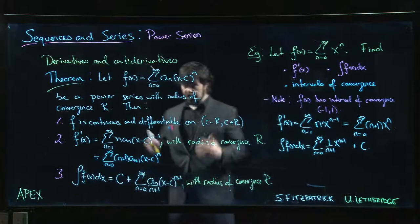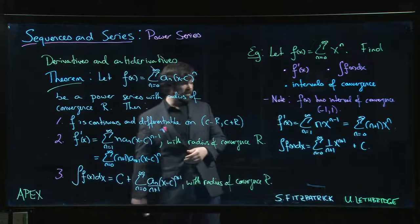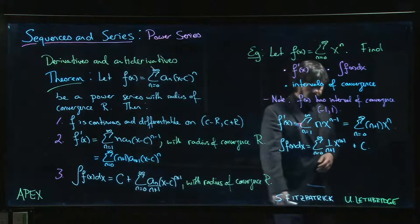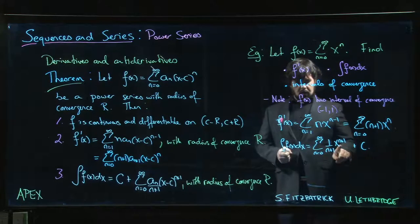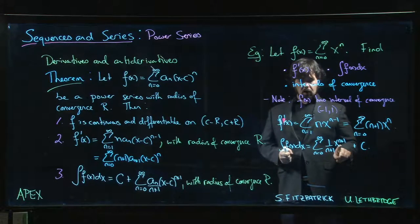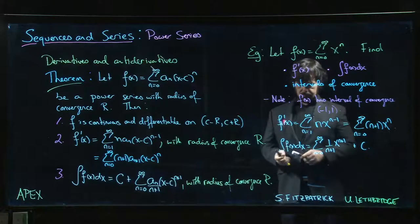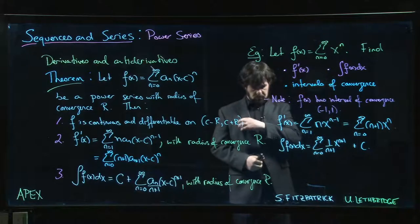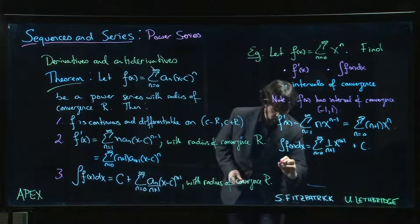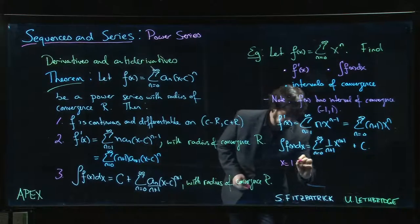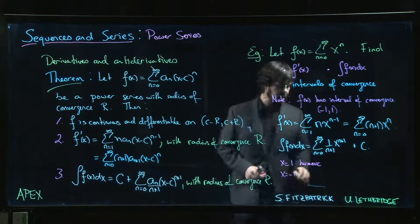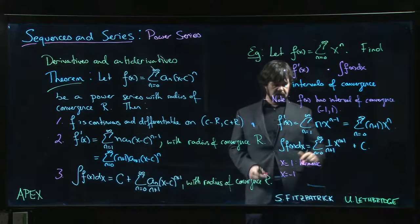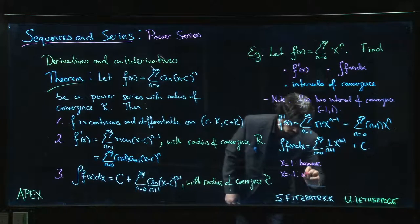It goes to 1 in the limit; radius is still 1. But we expect that the promise of the theorem at the endpoints—what can we say at the endpoints? At x=1, we get the harmonic series. At x=-1, we have (-1)^(n+1)/(n+1)—that's the alternating harmonic series.